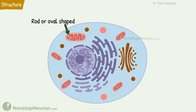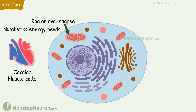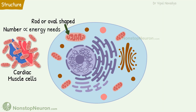Mitochondria are rod-shaped or oval organelles. The number in a cell depends on how much energy the cell needs. For example, cardiac muscle cells need more energy, so they have more mitochondria.